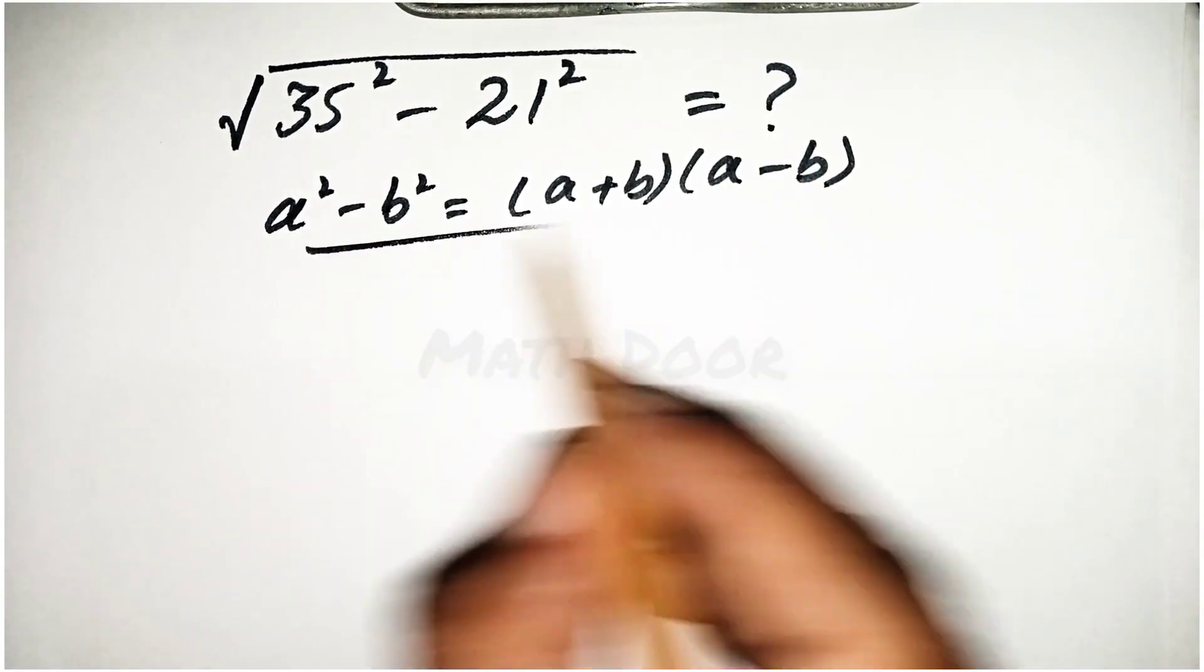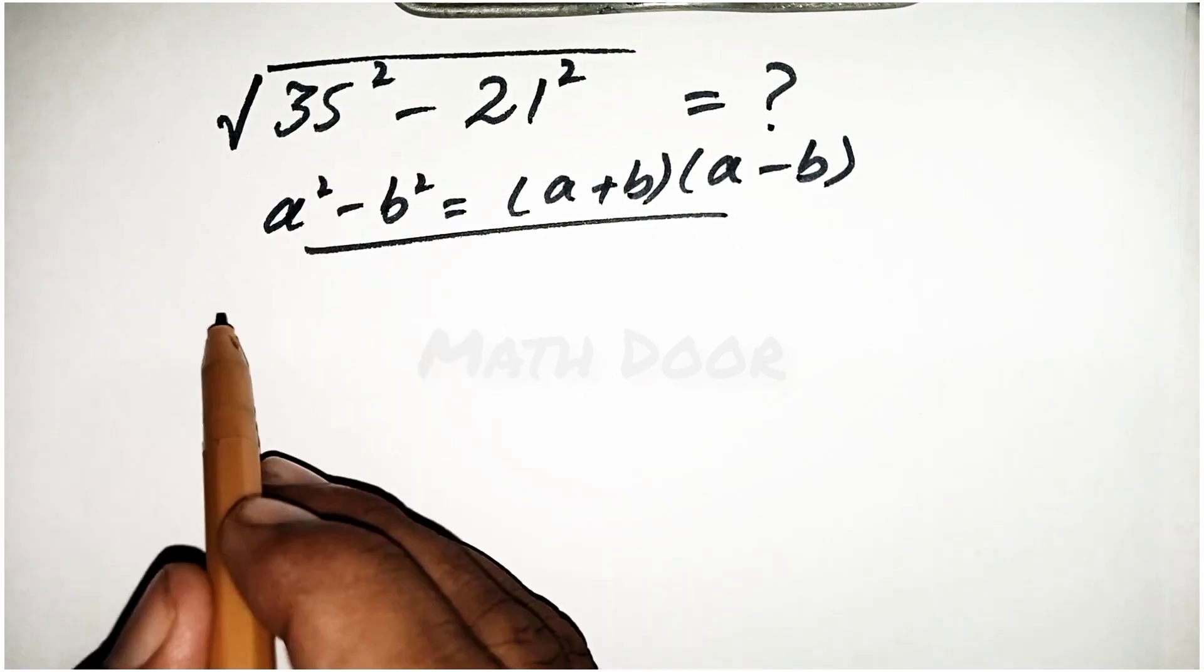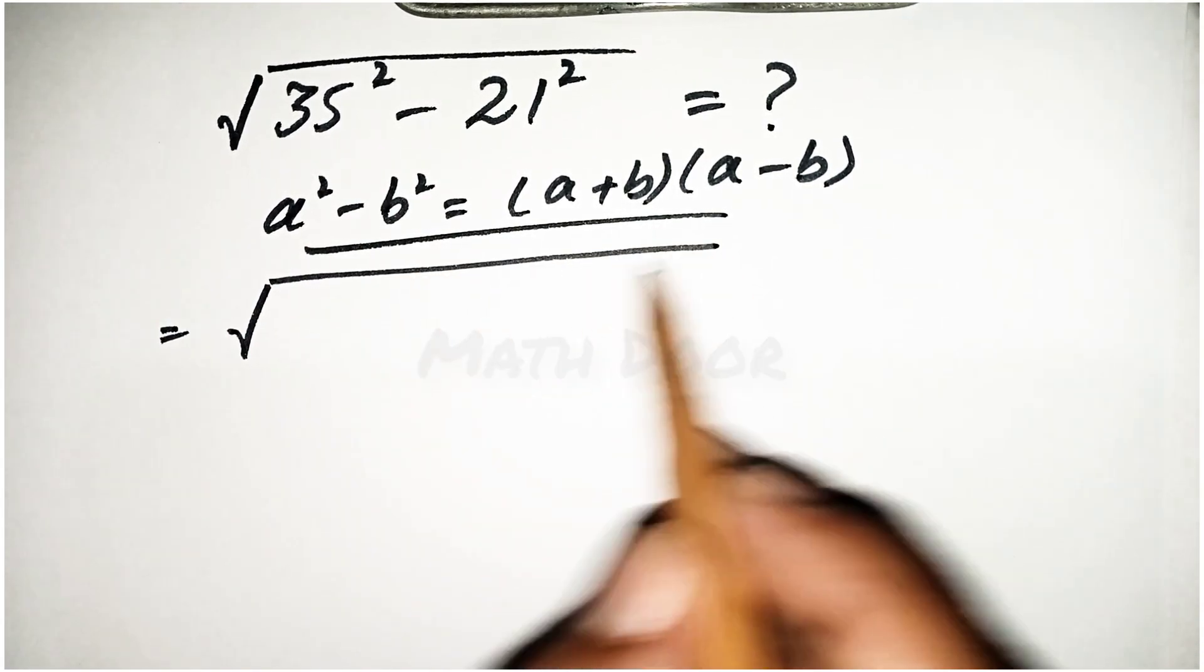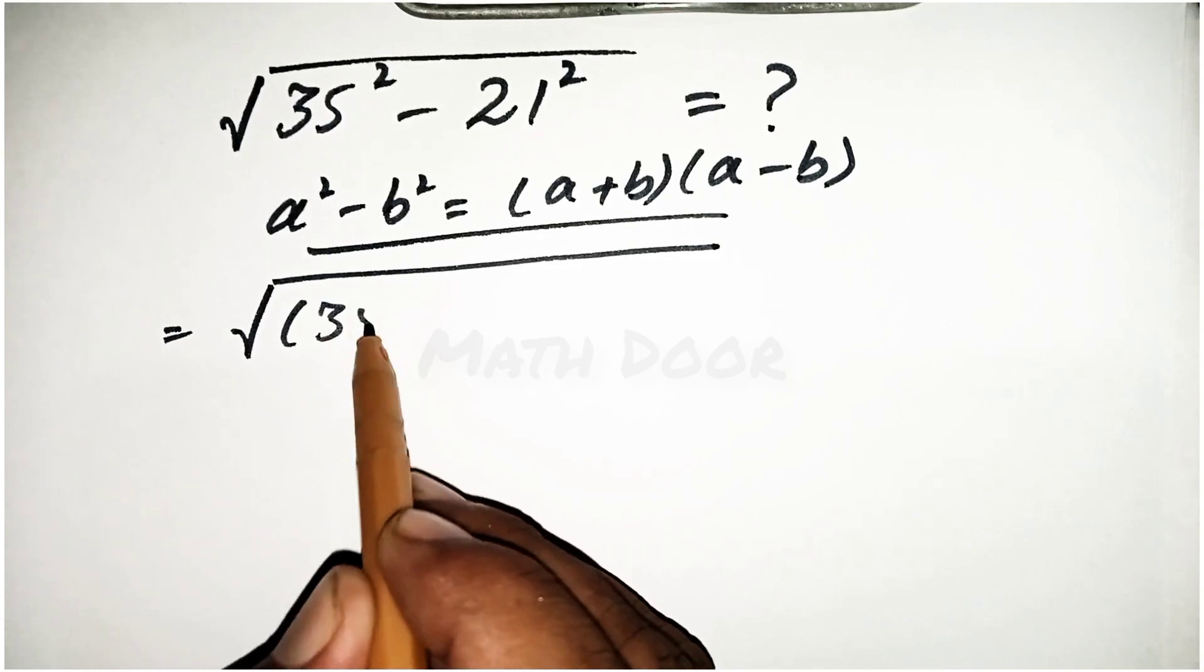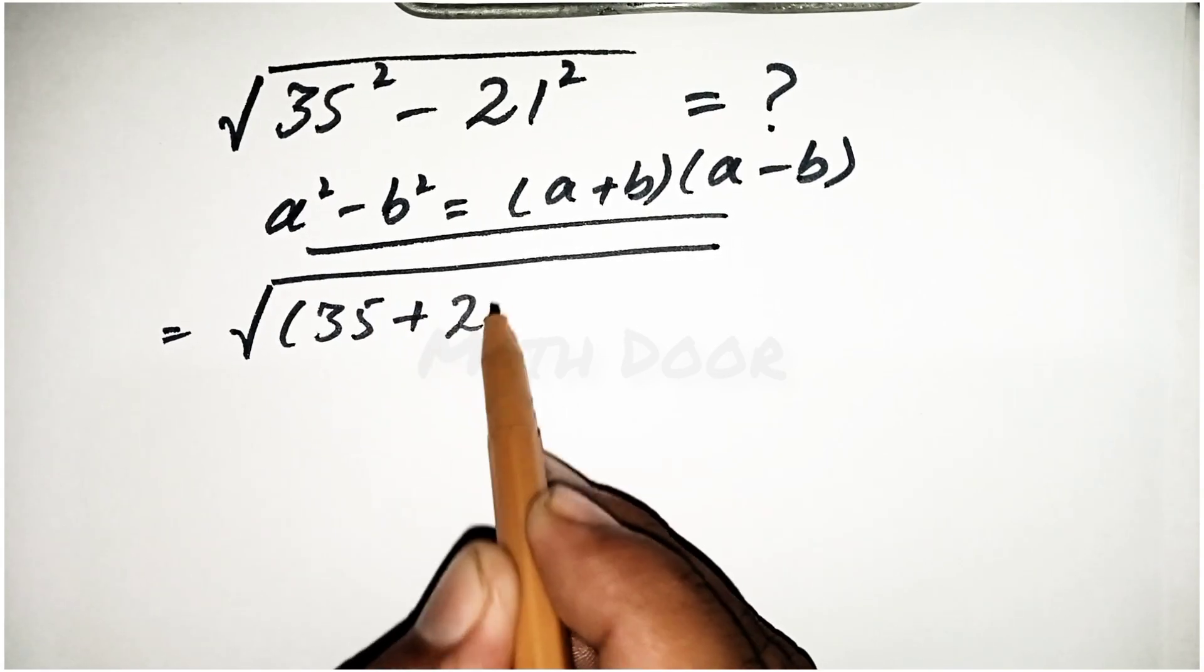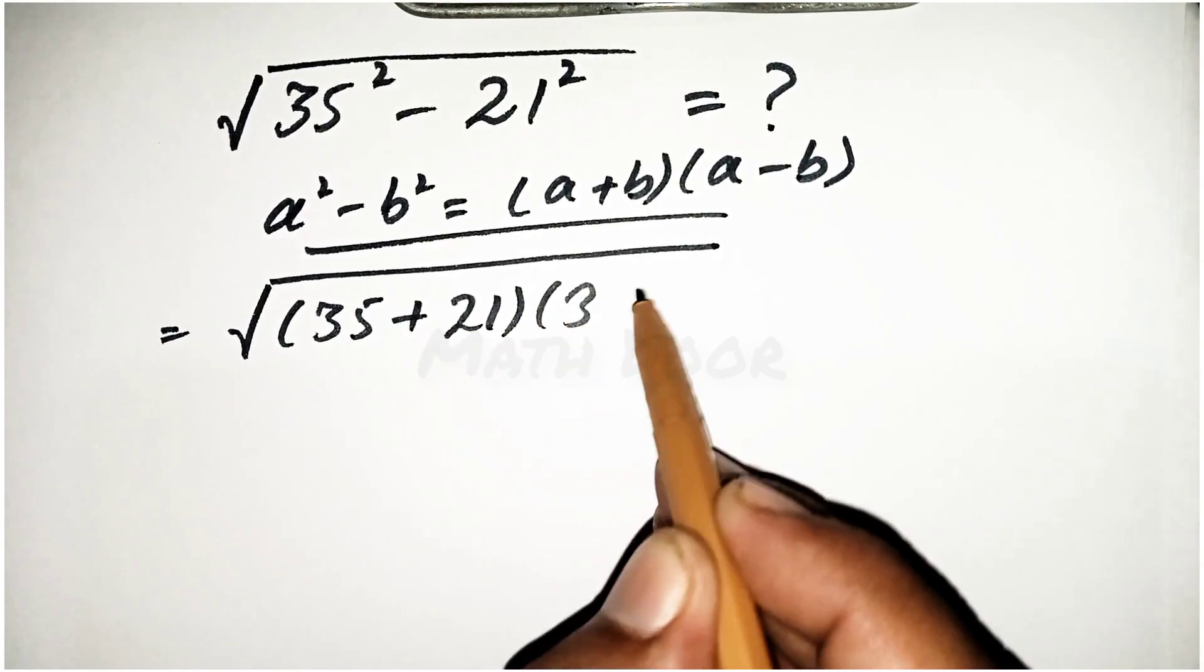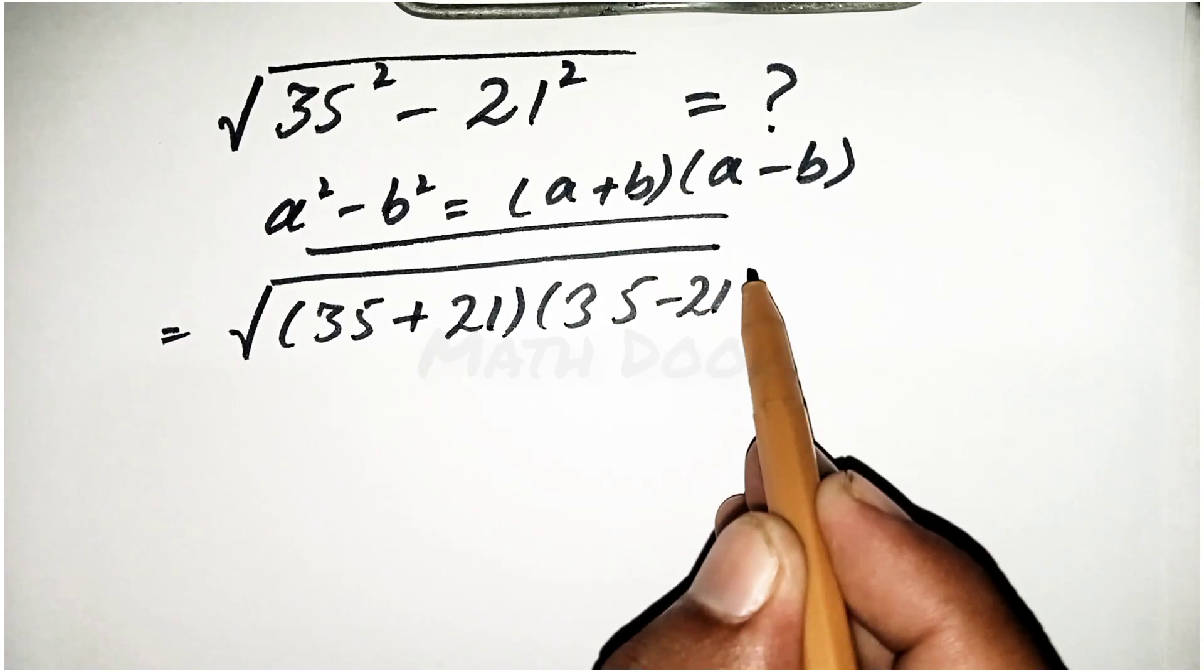So we apply this formula. Now we can write the above equation as (35 + 21)(35 - 21).